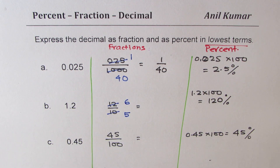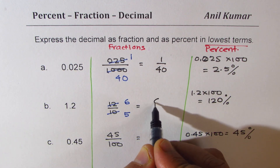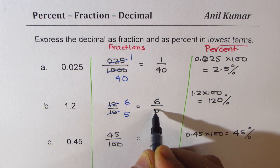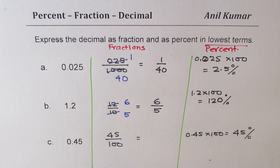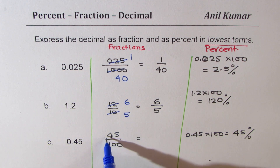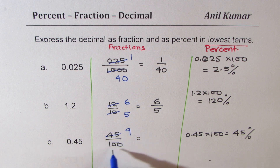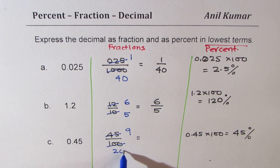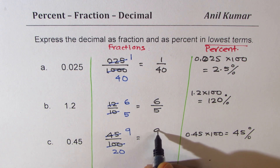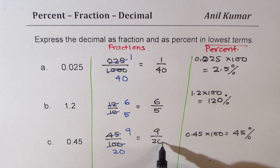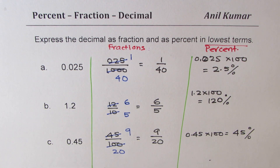So what we get here is the fraction 6 over 5. For 45 over 100, dividing by 5 gives us 9 in the numerator and dividing the denominator by 5 gives 20. So we get 9 over 20. That is how you convert decimals to fractions and percent.